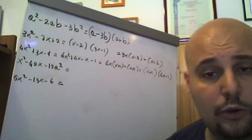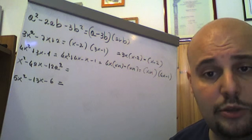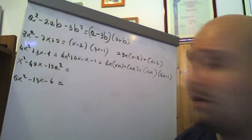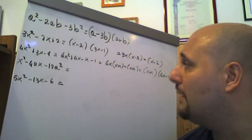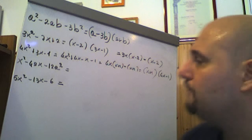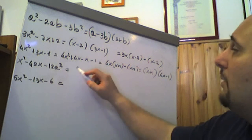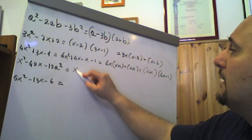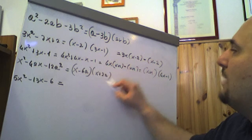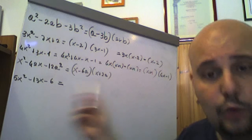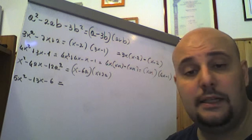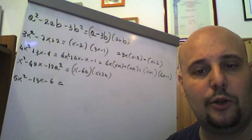X² − 4ax − 12a²: questo è un trinomio di secondo grado notevole a coefficienti letterali, dove −12a² è il prodotto di −6a × 2a. −6a + 2a = −4a. Quindi questo è (x − 6a)(x + 2a), scomposizione in due binomi di primo grado di x² − 4ax − 12a².